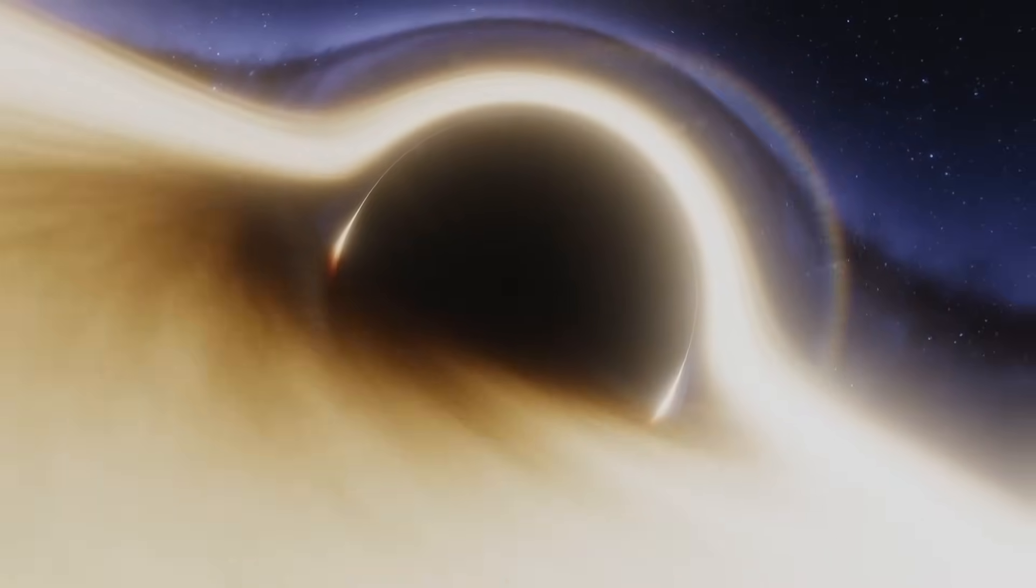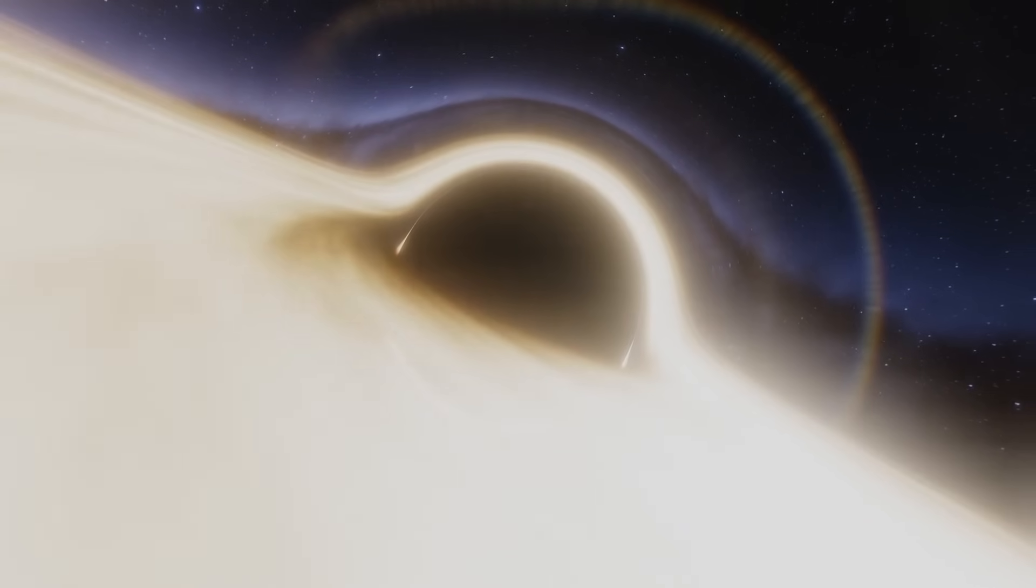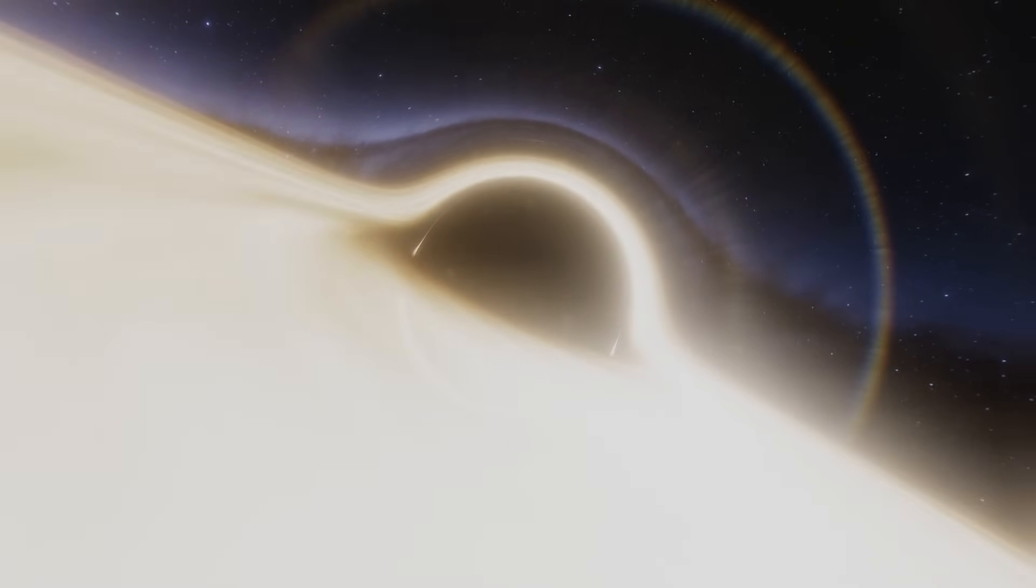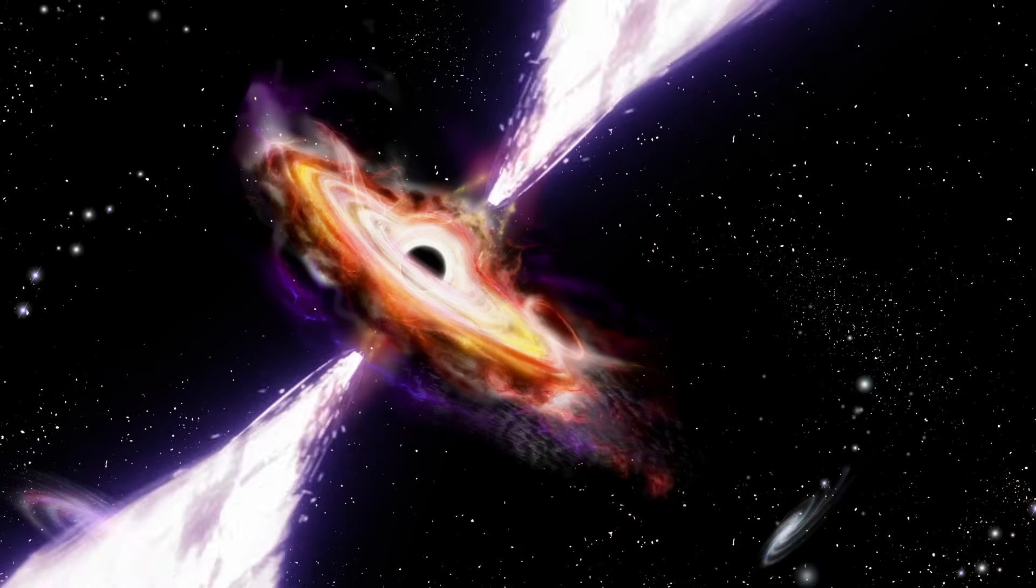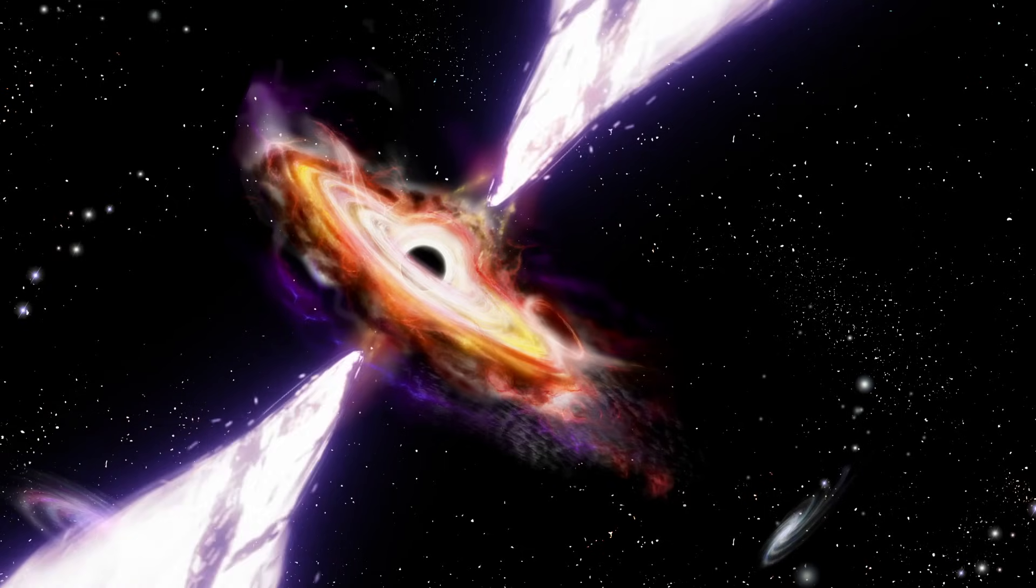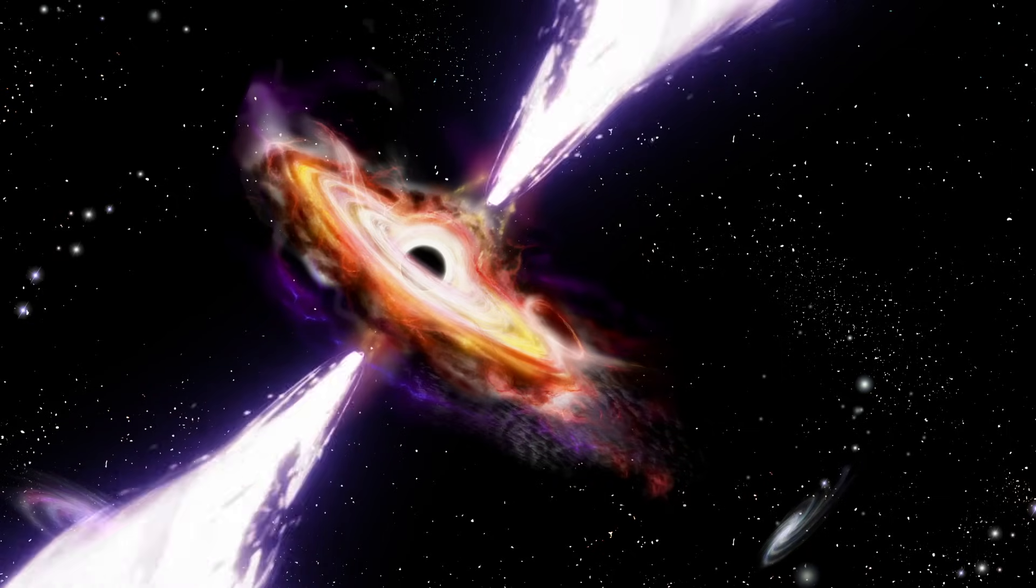Typically located at the centers of galaxies, they feed on infalling matter and unleash fantastic torrents of radiation. Among the brightest objects in the universe, the quasar's light outshines that of all the stars in its host galaxy combined, and its jets and winds shape the galaxy in which it resides.